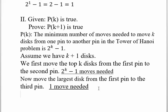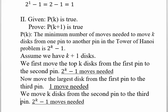And finally now, what do I need to do next? So we take our k disks that are on the second pin and we move them to the third pin. And we know that that requires 2^k - 1 moves by our inductive hypothesis.